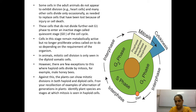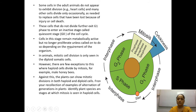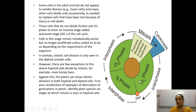Cells in G0 phase remain metabolically active but no longer proliferate unless called upon to do so depending on the requirement of the organism. If cell division is required, they exit G0 and enter G1 phase; if not required, they stay in G0.